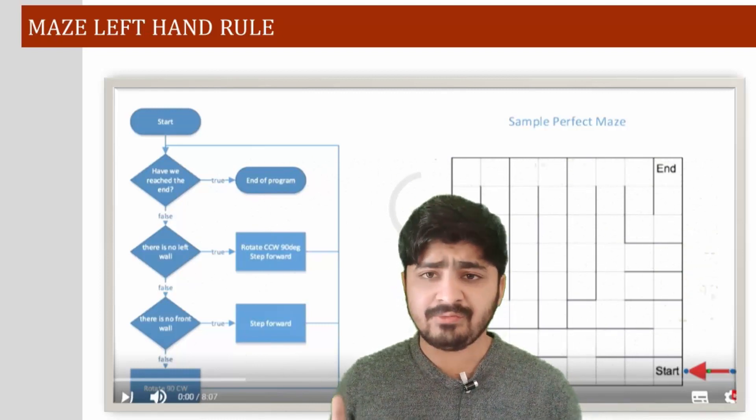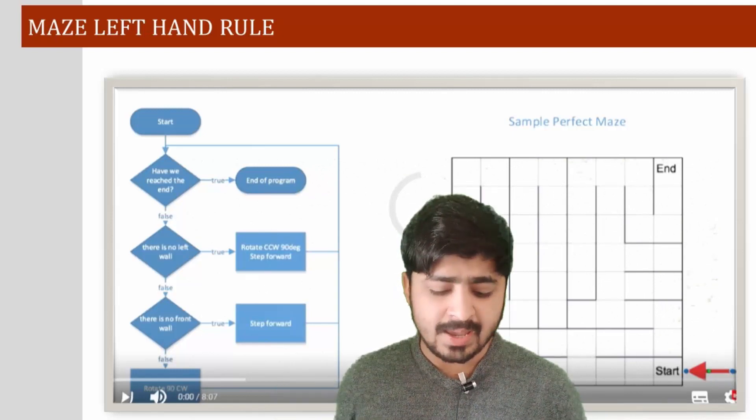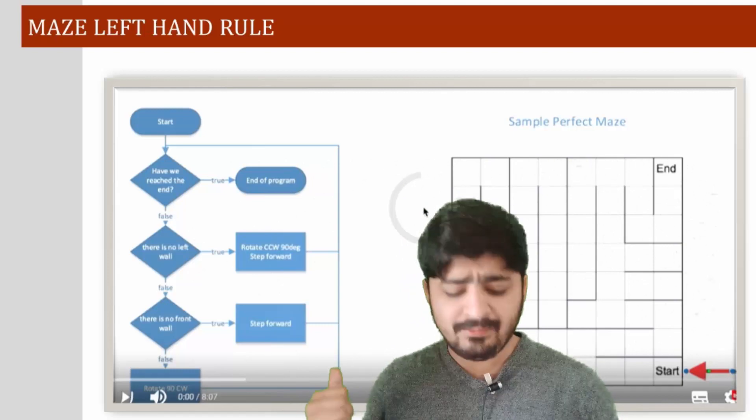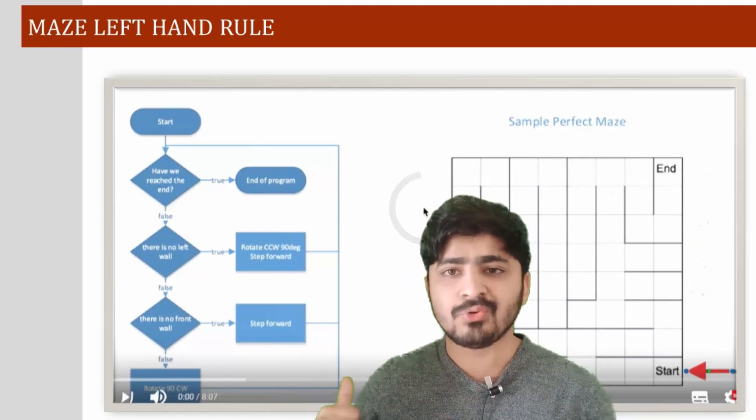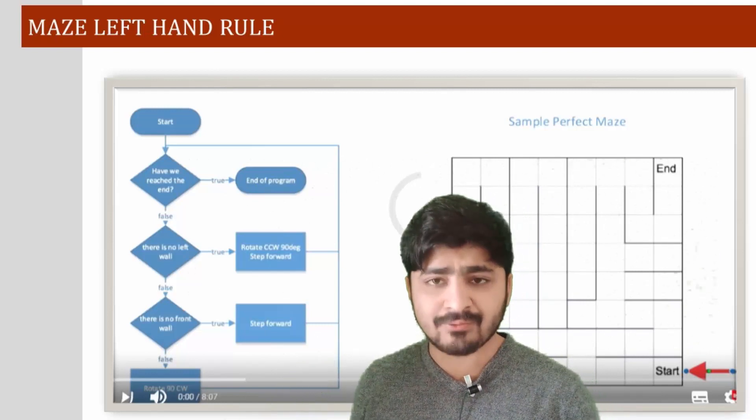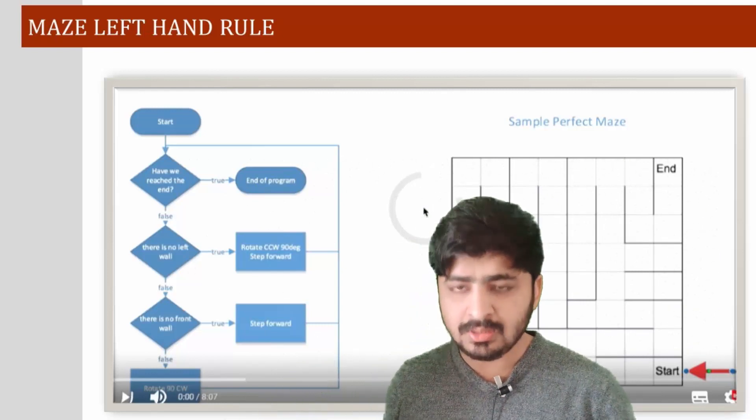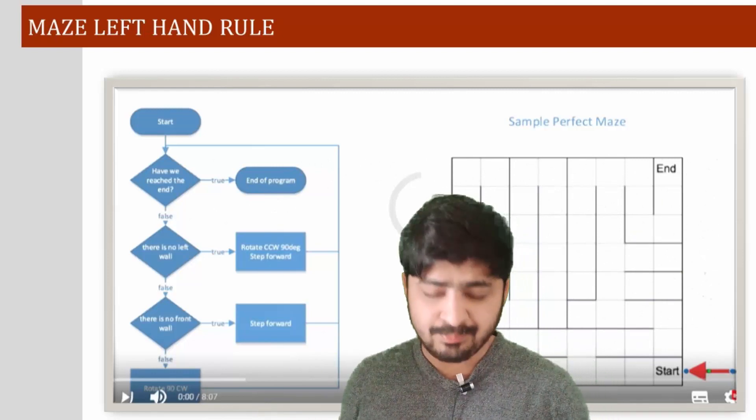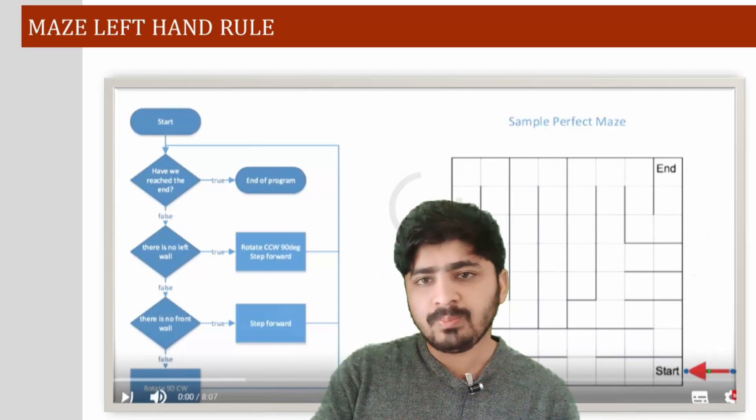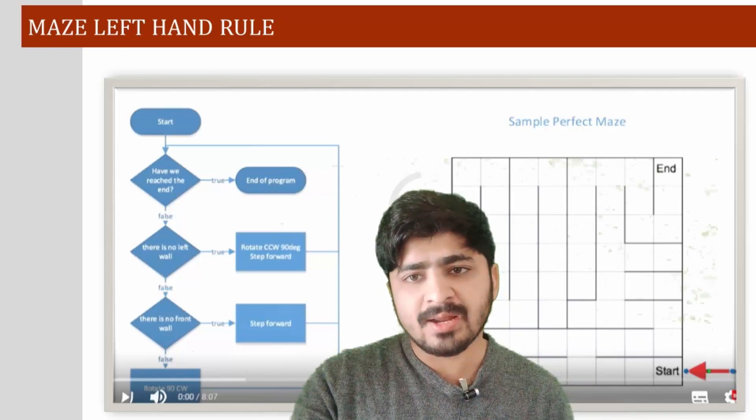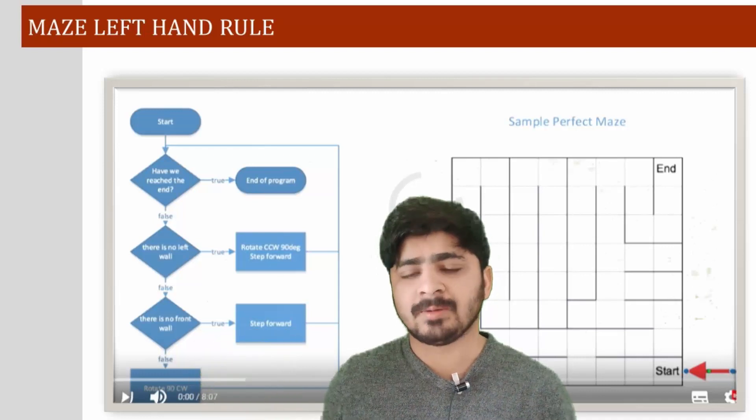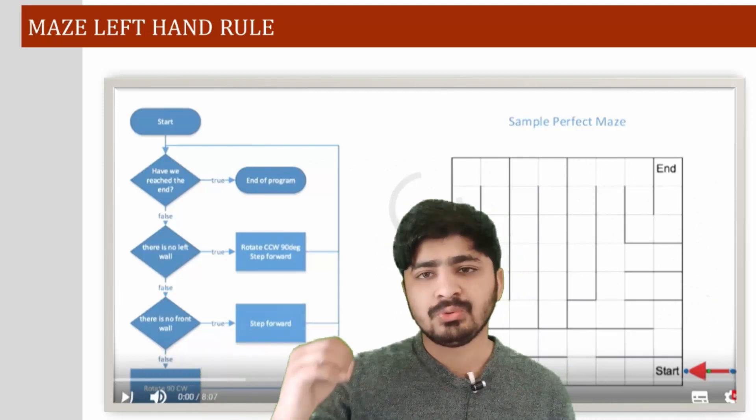If there is a left wall, then rotate 90 degrees. If there is no left wall, then move forward and step forward. Simply, it will be working as a loop. It will somehow reach the endpoint. Now what the five sensors will do is store this data.